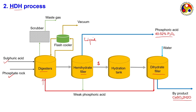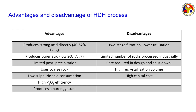Once dihydrate is formed, a pan filter is applied. Adding water takes out the byproduct gypsum, and the weak phosphoric acid is sent back to the digester — this prevents calcium sulphate forming on the surface of the ore. The hemi-dihydrate process directly produces 40 to 50 percent P2O5 acid. It produces a purer acid with low sulphate, aluminium, and fluoride content, limited precipitation, uses coarse rock, has low sulphuric acid consumption, and P2O5 recovery greater than 97 percent with purer gypsum.